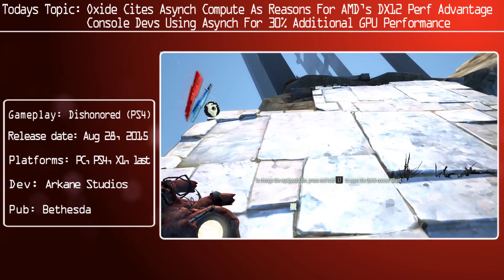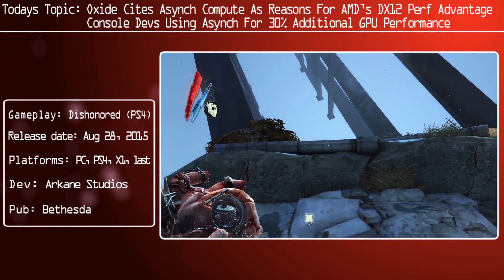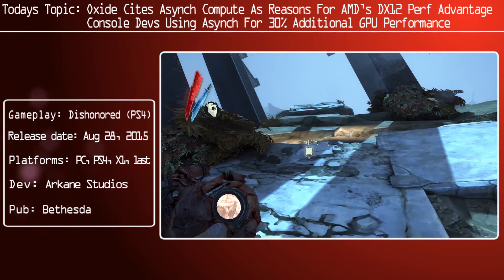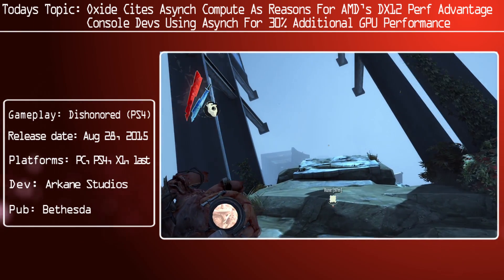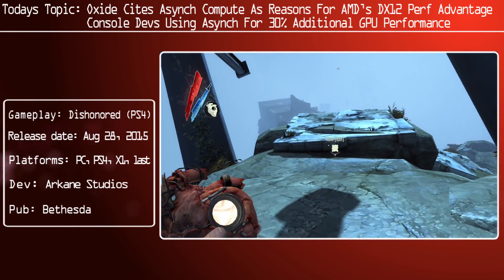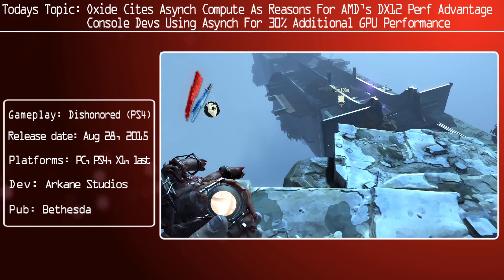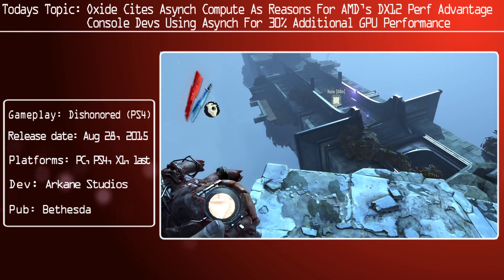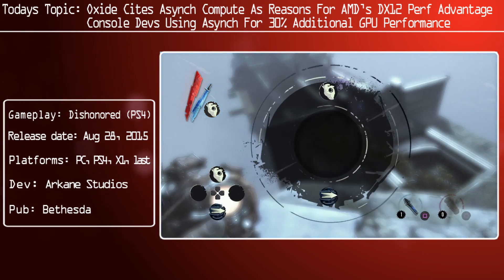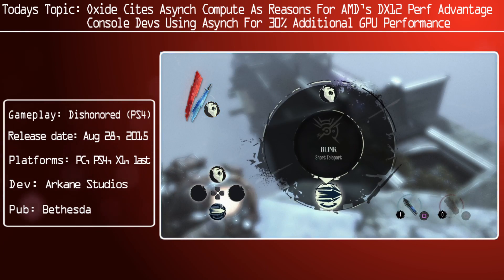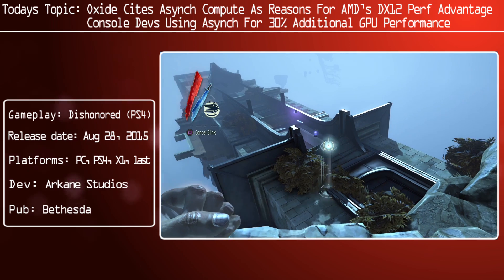Both AMD and Nvidia are working on their next generation GPUs right now — Nvidia working on Pascal, which is supposedly going to be more compute-friendly and is going to be using high bandwidth memory, just like AMD's Arctic Islands.